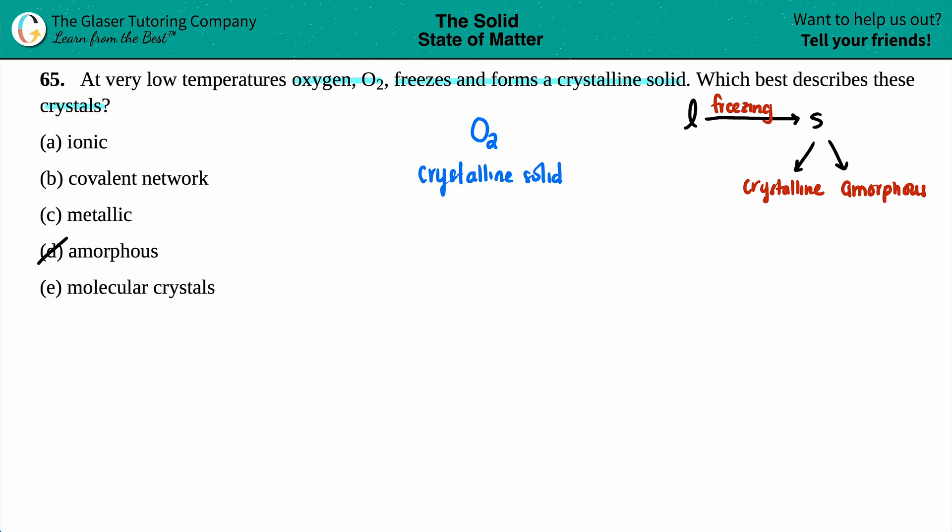Now just know that all of these other ones, ionic, covalent network, metallic and molecular crystals, these are all following in the crystalline solid. So you will branch out four ways. You have ionic, you have covalent network, you have metallic, and the last one is molecular.